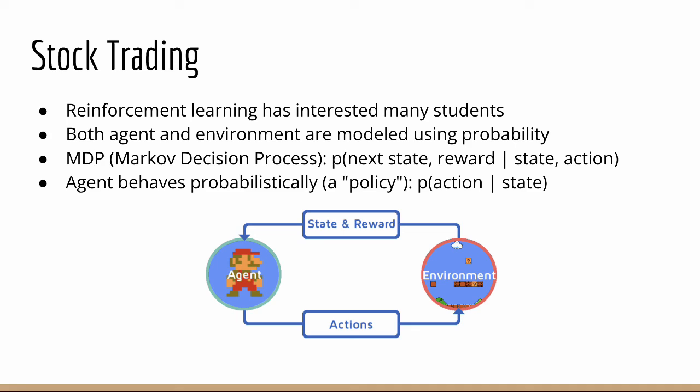The environment is modeled as a Markov decision process, or MDP, which basically means we have some probability distribution that tells us the state of the environment in the future, given the state of the environment now. The agent also behaves probabilistically, through a function known as the policy. The policy function takes in the state of the environment as an argument, and outputs a probabilistic action to take in the environment. So again, probability appears everywhere in reinforcement learning.